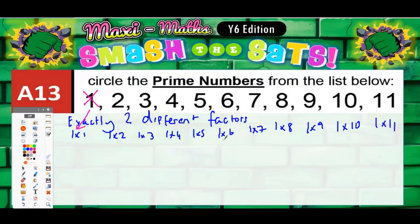For all the other numbers, if there's any other way of multiplying to make that number, then it's not prime. As soon as we find another way of making it, it's not going to be prime. So: is there any other way of making two? Can't think of one. Three? Can't think of one. But four — I could do two times two, which straightaway means four is not prime. Six — I can do two times three, which means six is not prime.